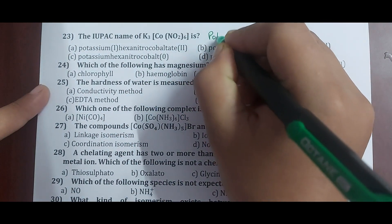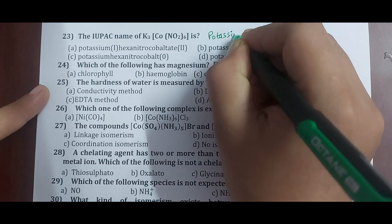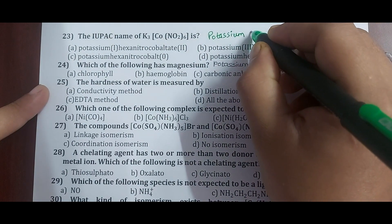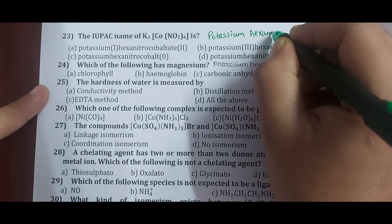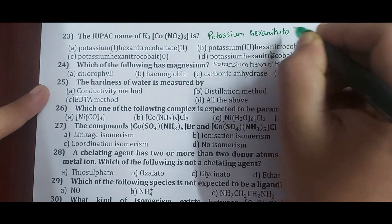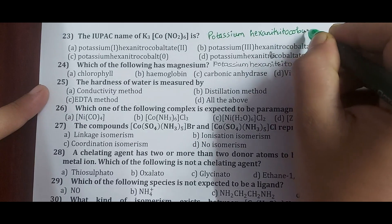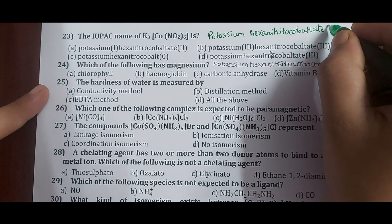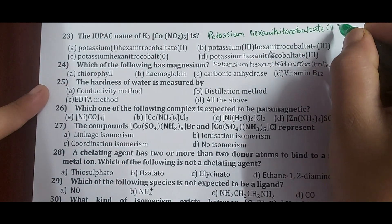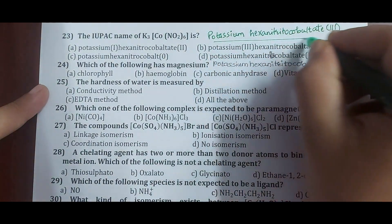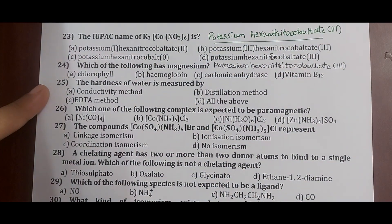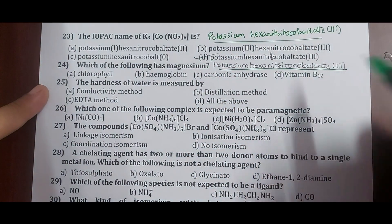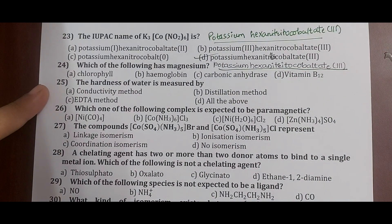Question 23: the IUPAC name of K3[Co(NO2)6]. K3 is written first, so we name potassium first, then the complex. In the complex: six NO2 ligands give 'hexanitrito'; cobalt with a negatively charged complex becomes 'cobaltate'; oxidation state is +3, giving Roman numeral III. The correct IUPAC name is potassium hexanitritocobaltate(III) — option D.